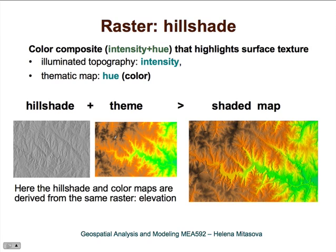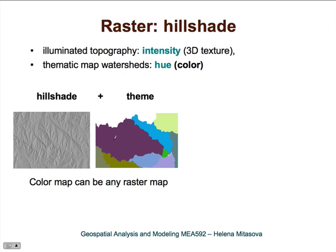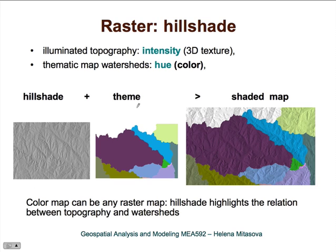We can use any color map for the theme. For example, land use is very useful to show the relationship between land use and topography. Here we have an example using hillshade along with watershed basins, which highlights the relationship between the basins and the topography.